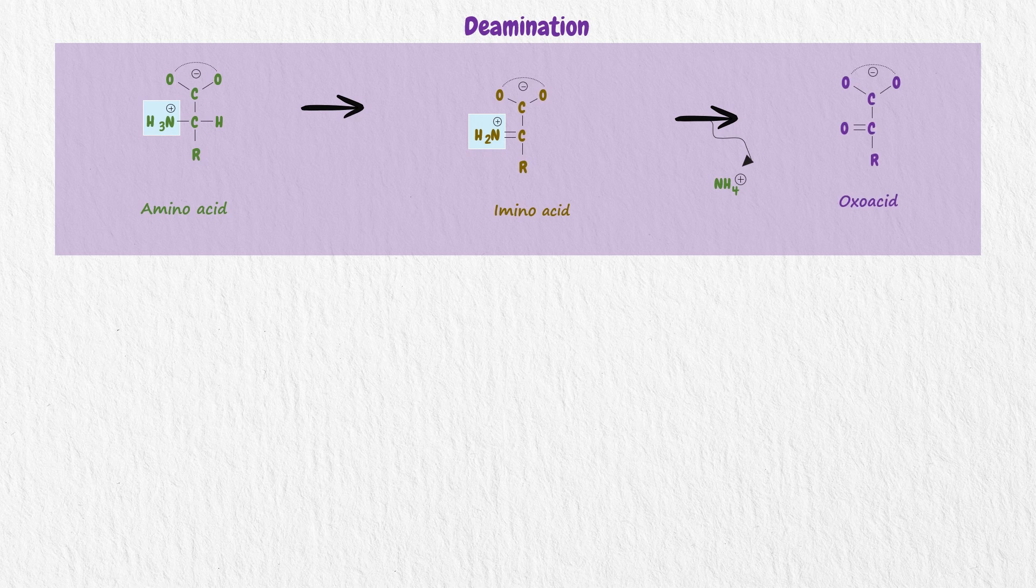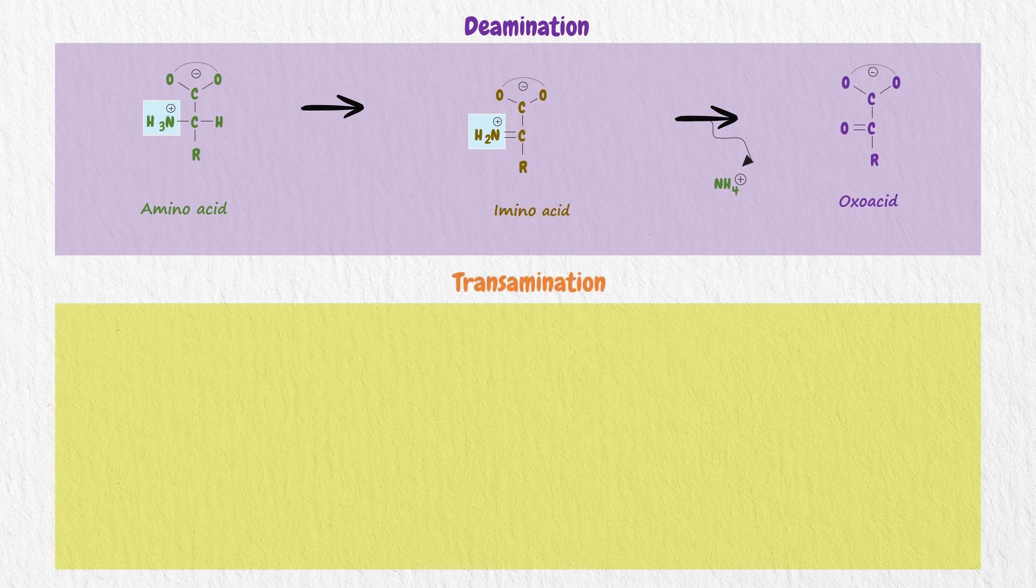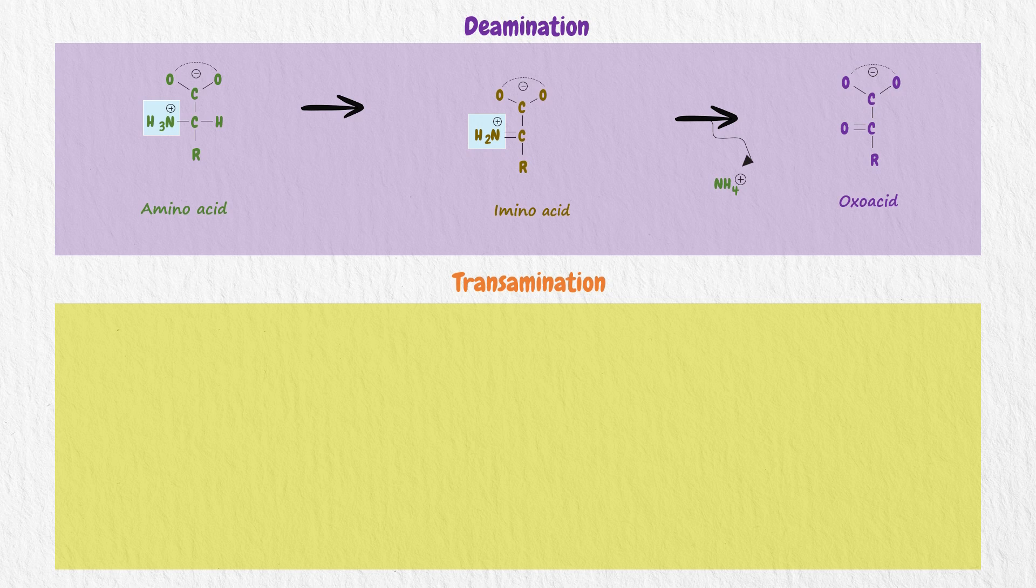Among the amino group transfer reactions, transamination is particularly important. These reactions are catalyzed by transaminases and occur in both catabolic and anabolic amino acid metabolism.